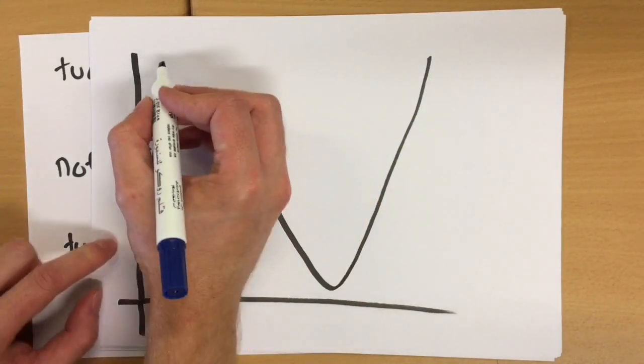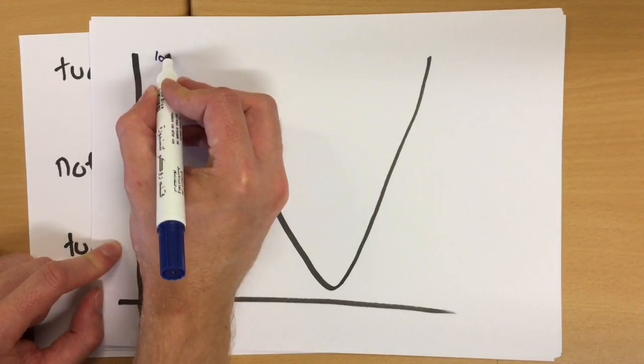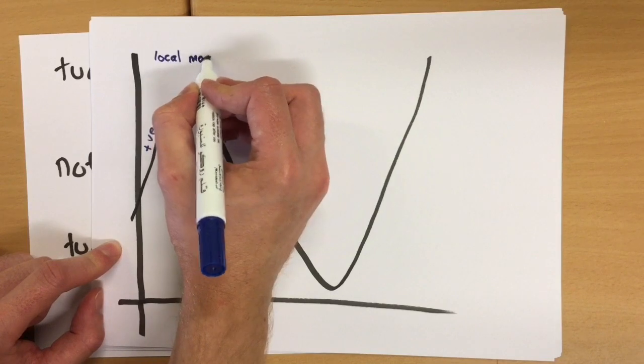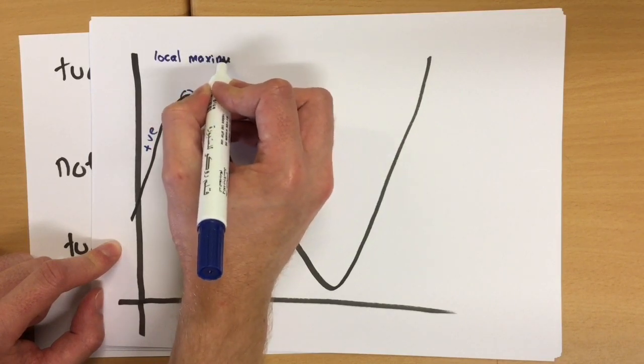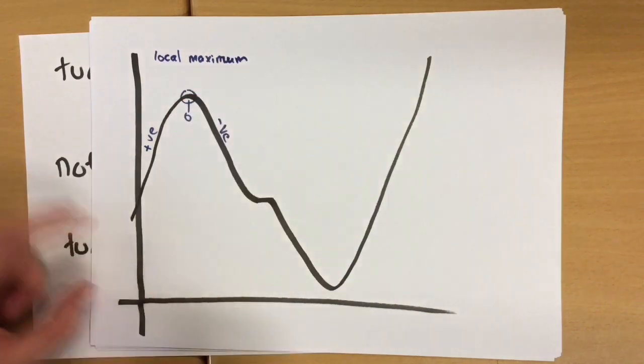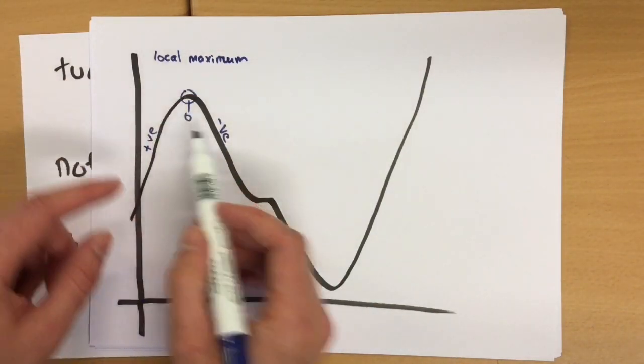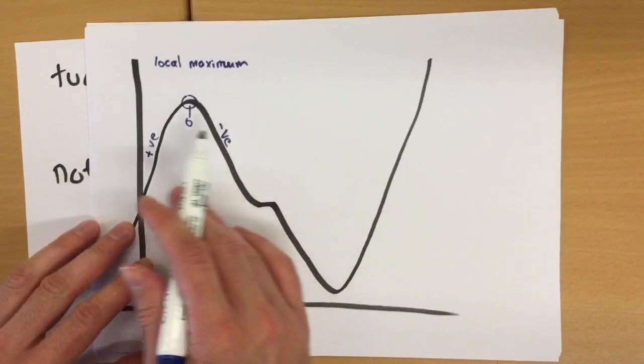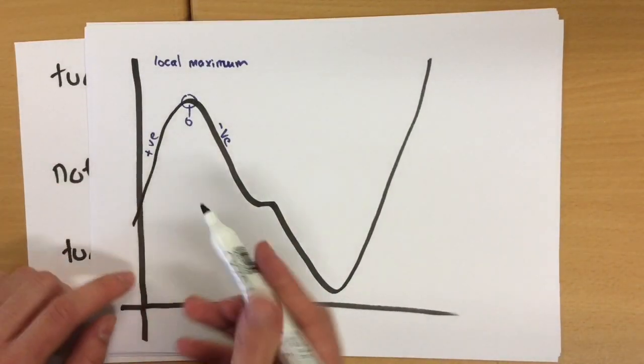And we say that this is the local maximum. Can't spell maximum. Okay, the reason it's got a local there is because actually the graph continues much higher over here, but it just happens in this small locality, that's the maximum point.